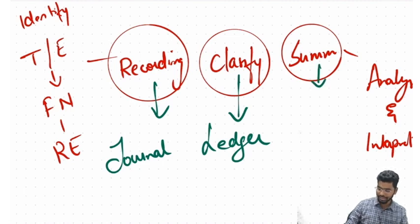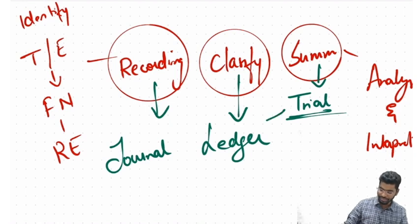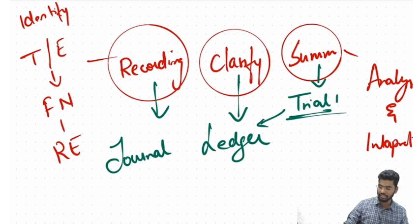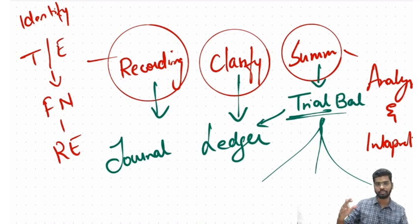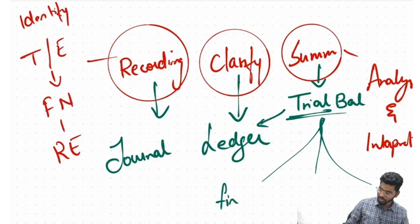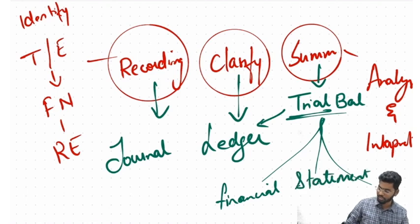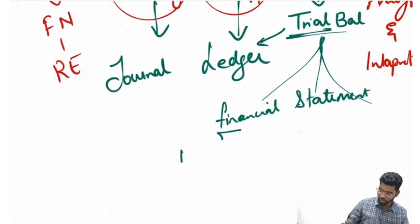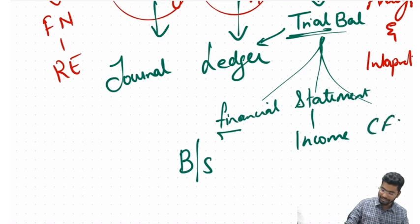Summarization is done through a trial balance, which is a summary of all my ledger accounts. This trial balance leads me to the preparation of financial statements, which are basically your balance sheet, income statement, and cash flow statement.